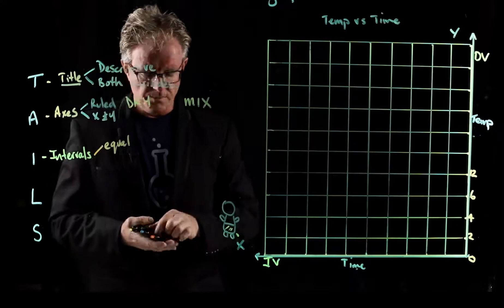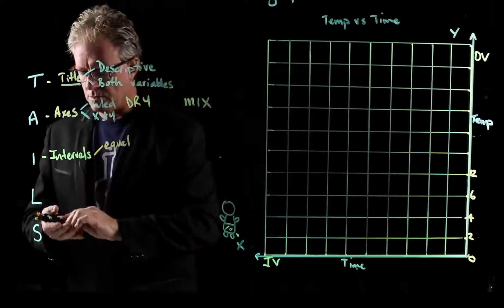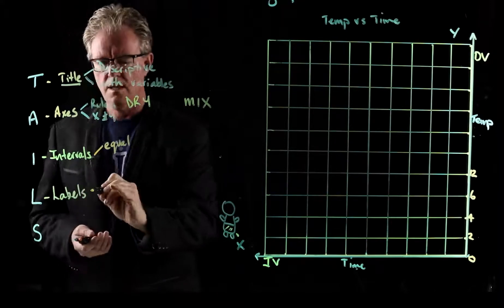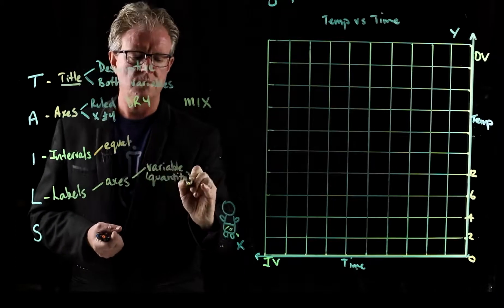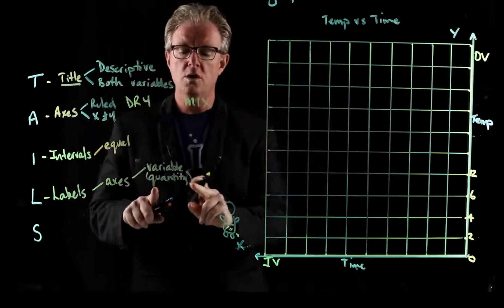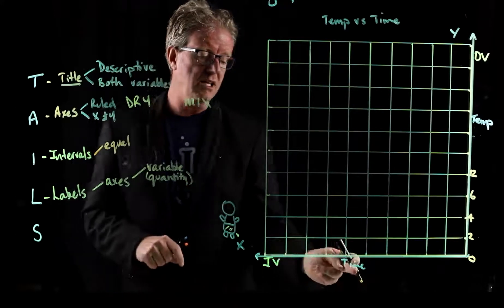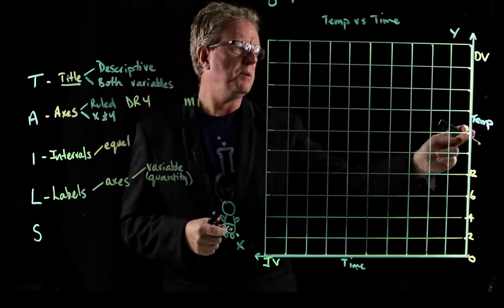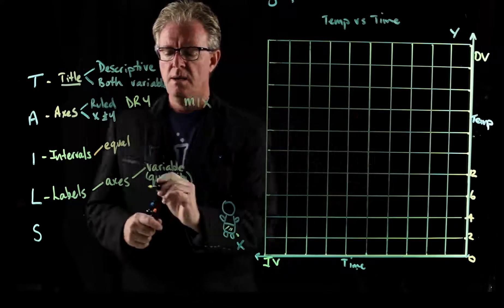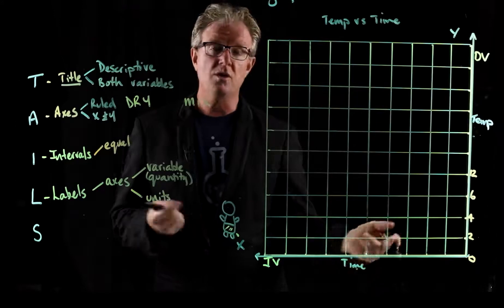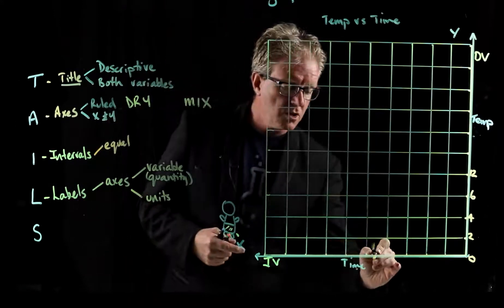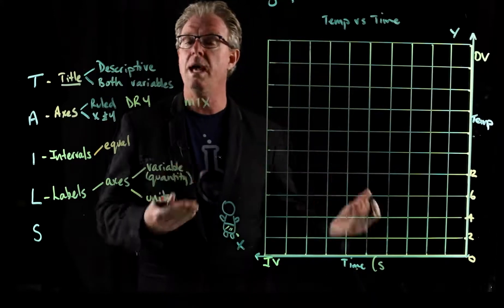What does L mean? Well, L stands for labels. Your axes need to have labels. So your variable or your quantity needs to be labeled. So down here, I've got it labeled time. And up here, I've got it labeled temperature. But the other thing is it needs to have units. You need to make sure that what unit are we measuring it in? Well, it could be seconds, it could be hours, it could be days, it could be months.